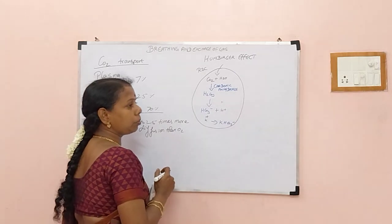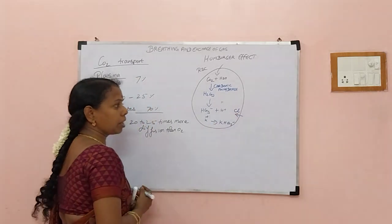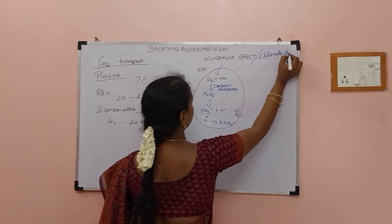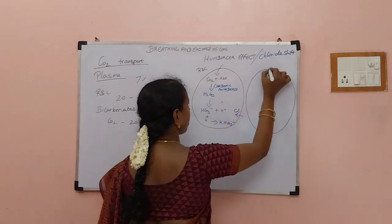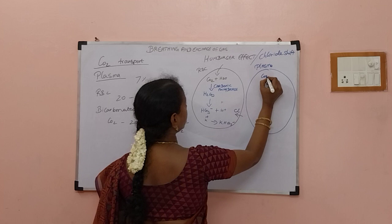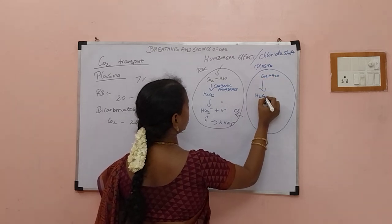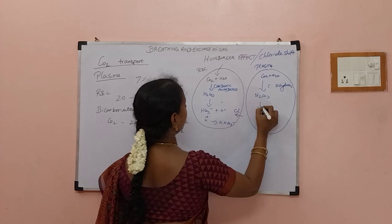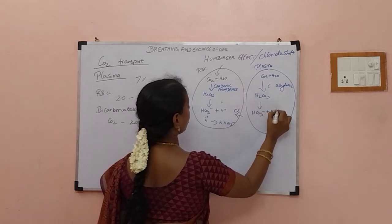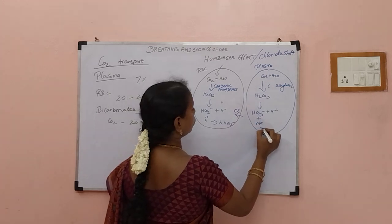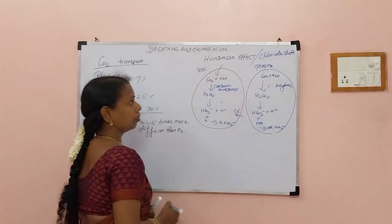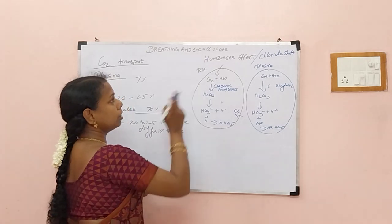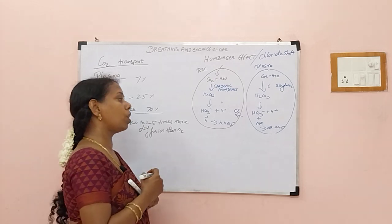To balance the potassium ion exchange, some chloride ions move inside the RBC, which is why this is also called the chloride shift. The same process happens in plasma: carbon dioxide combines with water to form carbonic acid with the help of carbonic anhydrase, then converts into bicarbonate and H+ ions. In plasma, bicarbonate combines with sodium to form sodium bicarbonate. So in plasma it is sodium bicarbonate, and in RBC it is potassium bicarbonate. The other name for the Hamburger effect is the chloride shift.